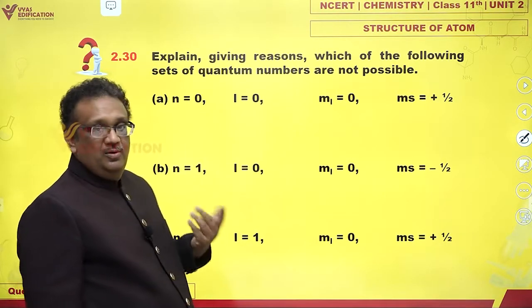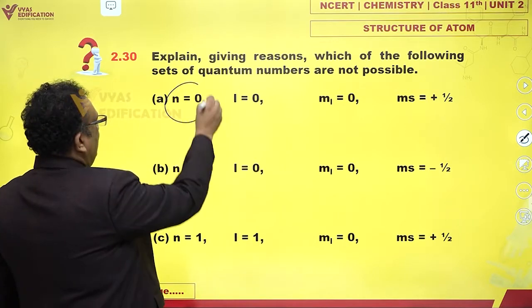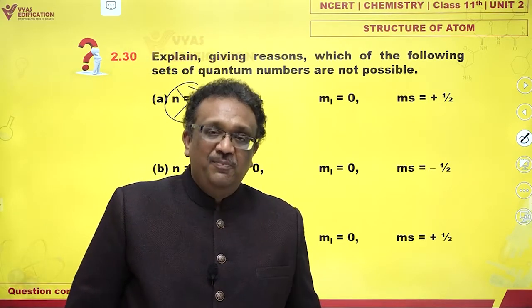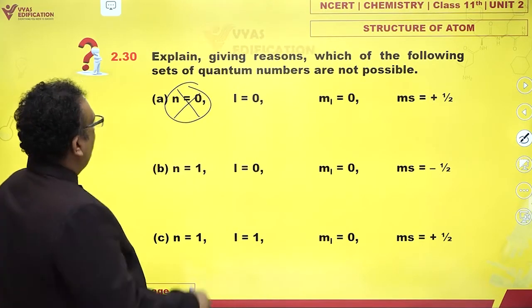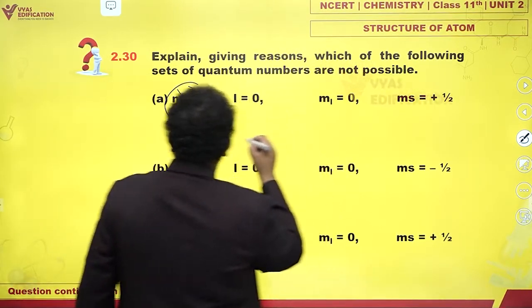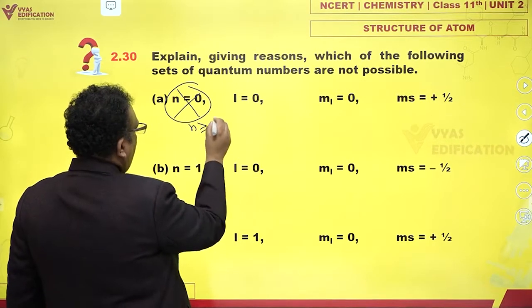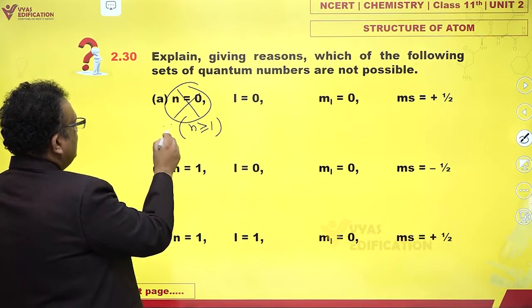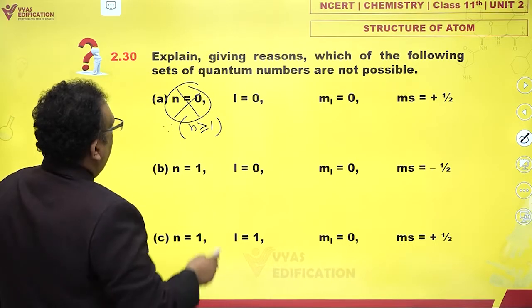n equals 0. n equals 0 is not possible. That means 0 shall not, it has to be at least 1. n begins from 1. So since reason is n can have a value greater than or equal to 1, it cannot be 0. This is not possible.